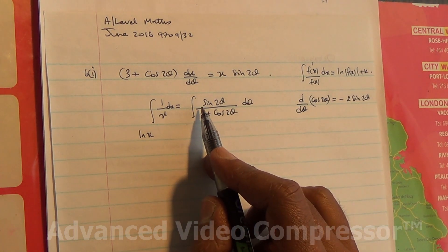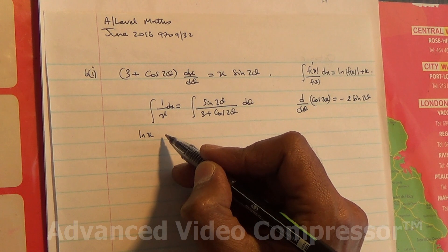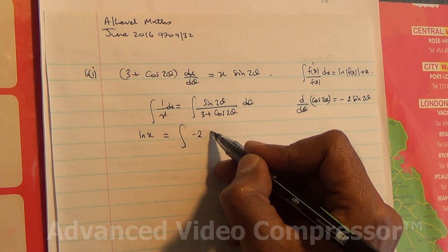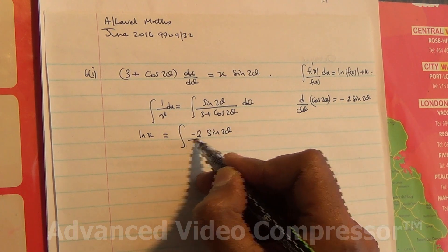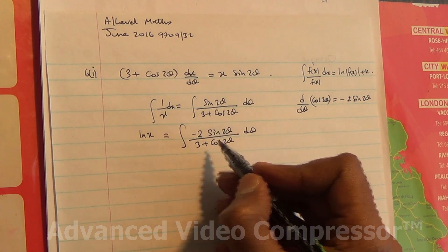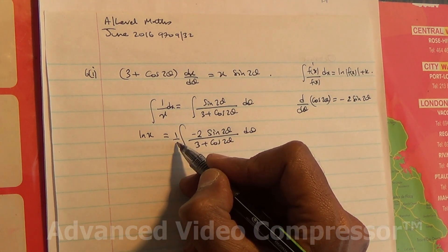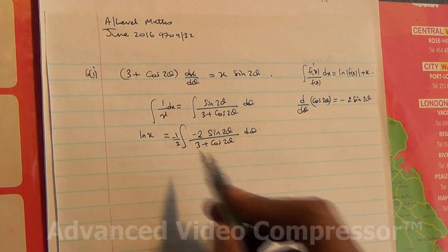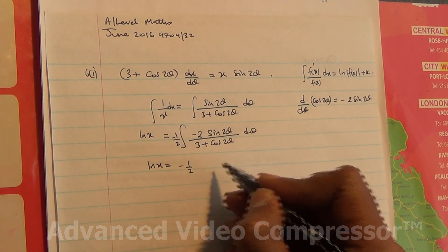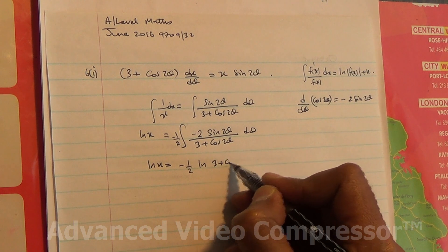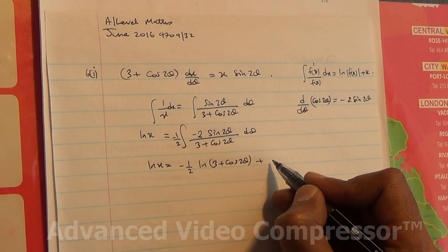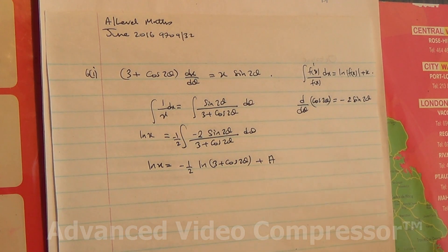Since there's no minus 2, we're going to put a minus 2 in the numerator. So ln x equals the integral of (−2·sin2θ) / (3 + cos2θ) dθ. Remember, the minus 2 never used to exist, so we put minus a half outside to compensate. That puts it back to the same. So ln x = −(1/2)·ln(3 + cos2θ) + a, where a is the new constant.